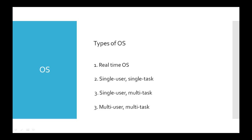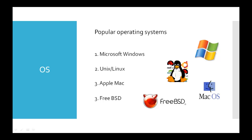Multi-user, multitasking operating systems allow multiple users to simultaneously run multiple applications on their computer. Operating systems are used on most, but not all, computer systems. Most simple, single-function computers, such as microwave ovens with digital keypads, do not require an operating system. On the other hand, all personal desktop and laptop computers and servers do require an operating system.